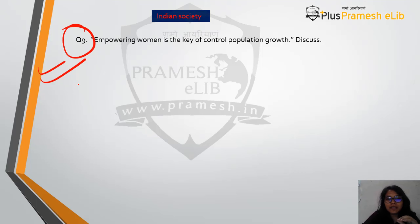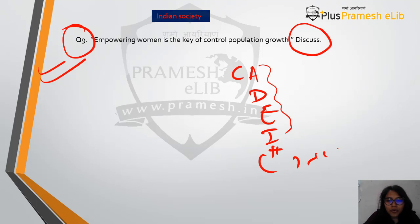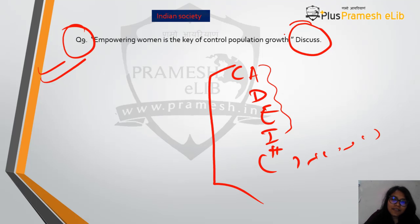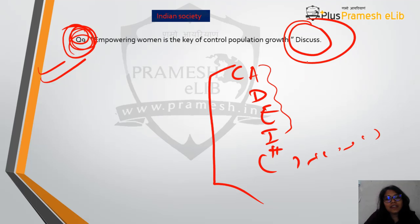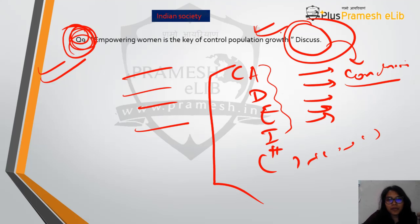The question is: 'Empowering women is the key to controlling population growth. Discuss.' As I told you, keywords like critically analyze, discuss, elaborate, and illustrate are used by UPSC either at the start or end of the question, and you need to follow that approach. When the keyword is 'discuss,' you must give a conclusion, because discussion cannot be left without one.